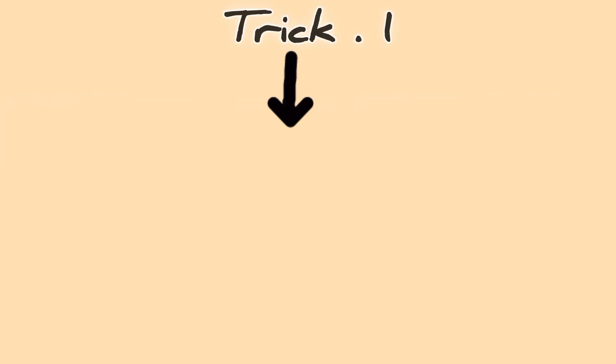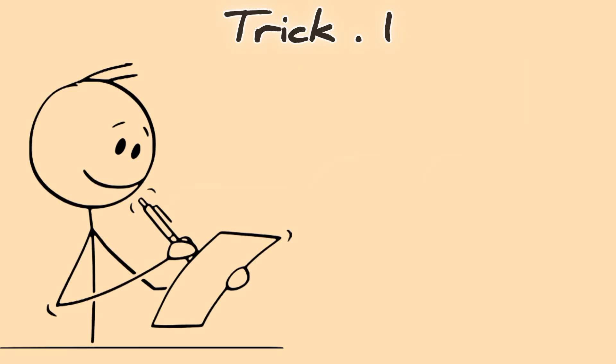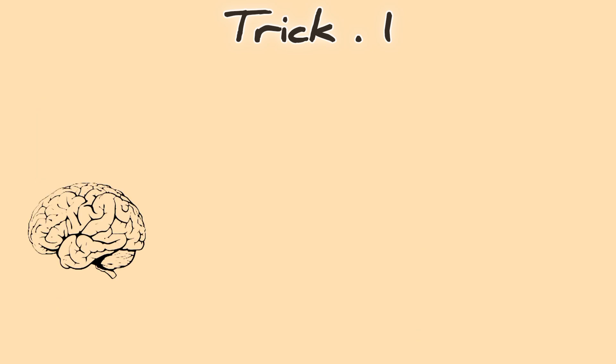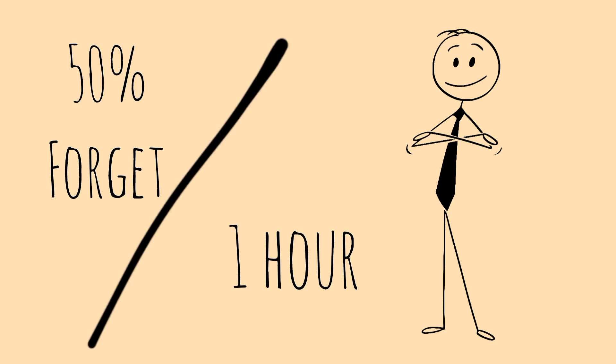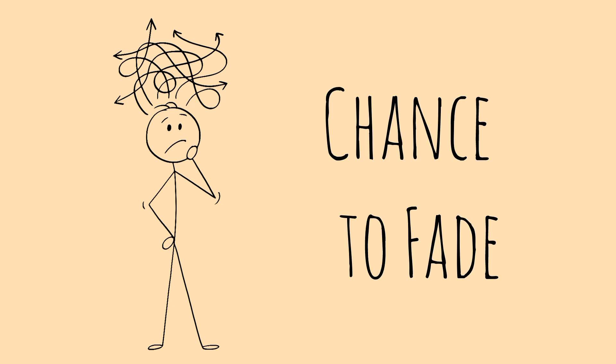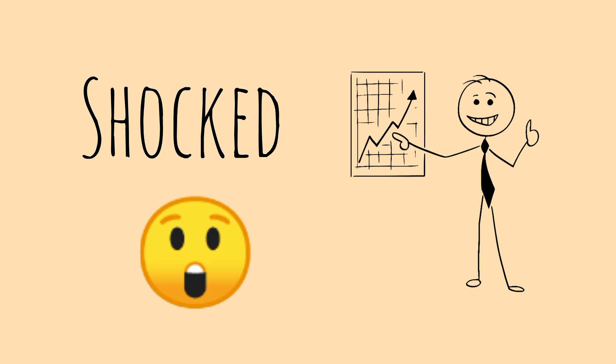Memory Trick 1: The 10 Second Rule. This is a secret technique used by memory champions. Right after you read, watch, or learn something new, close your eyes and try to recall it within 10 seconds. Why? Because this forces your brain to activate and store the information instantly. It's like pressing save on a computer. Most people read something once and assume they'll remember it, but they won't. Instead, they forget nearly 50% of what they learned within an hour. But if you force yourself to recall it immediately, your brain locks it in before it even has a chance to fade. Try this once, and you'll be shocked at how much more you remember.